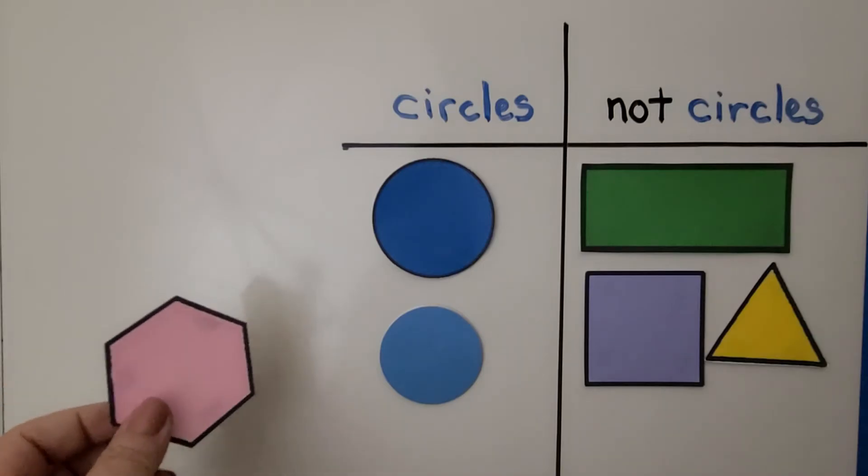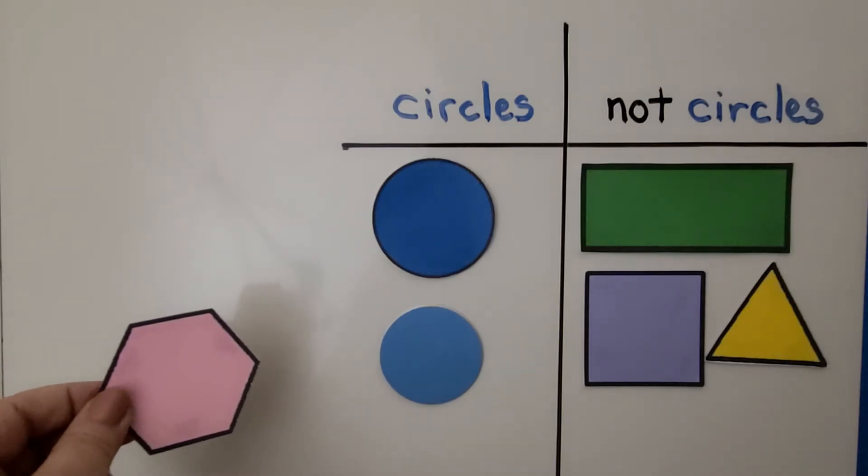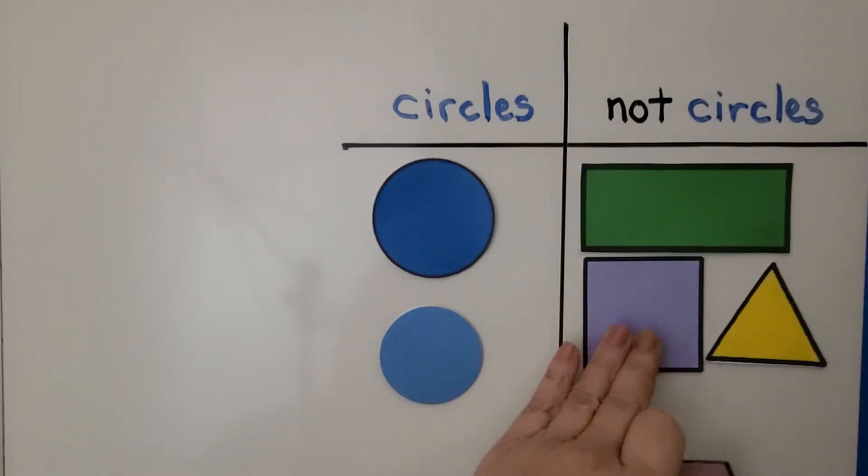And how about the last one? Is this a circle or not circle? If you said not circle, you're right. This is a hexagon. That's not a circle.